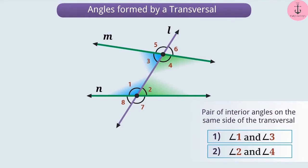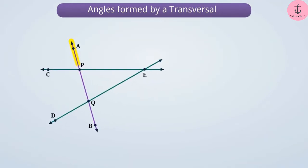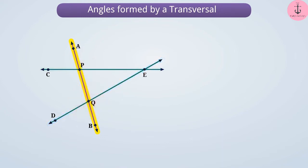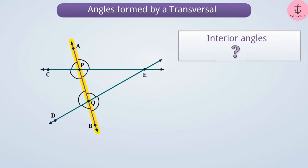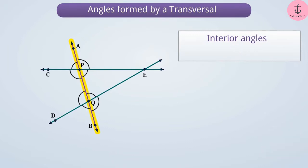Let us consider another example. Line AB intersects line CE at point P and line DE at point Q, forming 8 angles. The interior angles formed by transversal AB are angle CPB, angle BPE, angle DQA, and angle AQE.